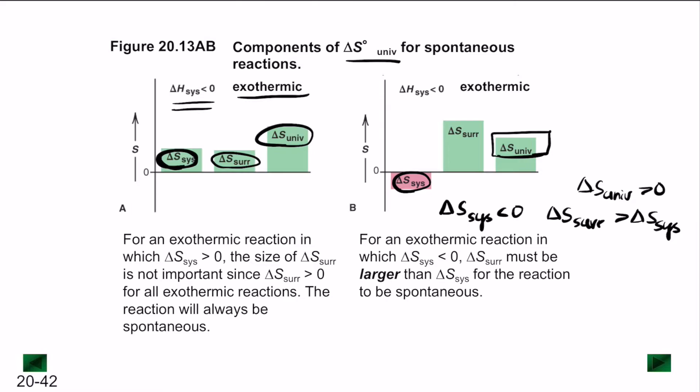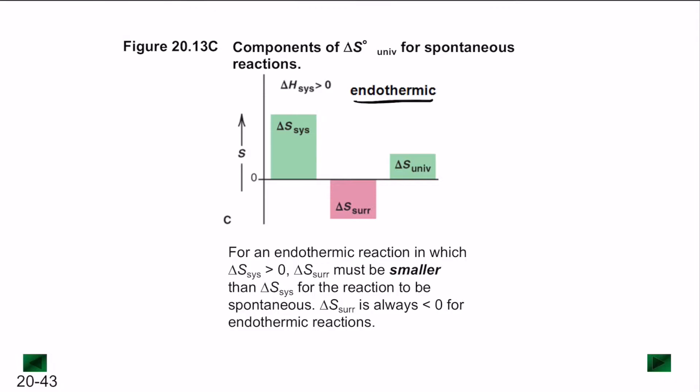For an endothermic reaction, most commonly delta S of the system is greater than delta S of the surroundings. The main reason is that heat is being drawn from the surroundings into the system, which results in lesser entropy on the outside and greater entropy on the inside.